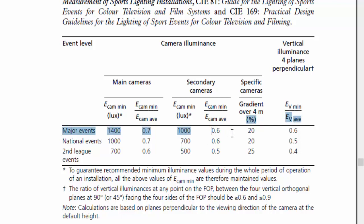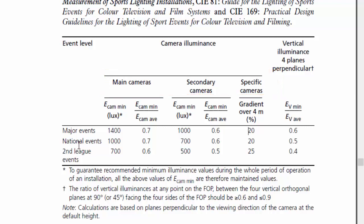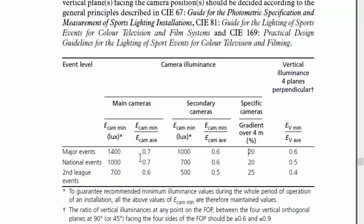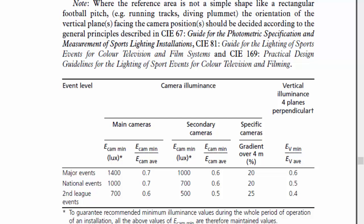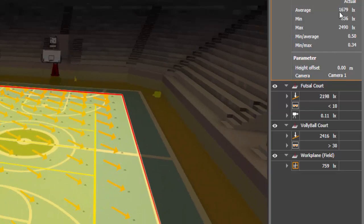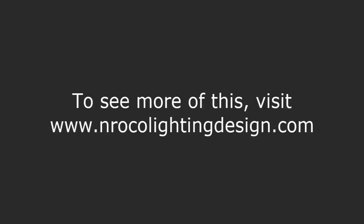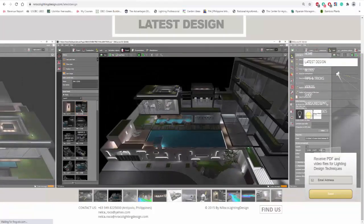The uniformity requirement is 0.6. For main cameras, the requirement is 1,400 lux; for secondary cameras, 1,000 lux. For national events it's 1,000 lux for main cameras and 700 lux for secondary cameras. For second league events it's only 700 lux. Our project achieved 1,679 lux for camera number one — great result!